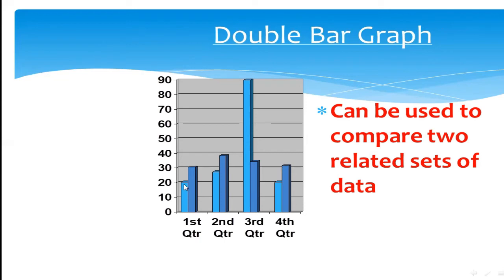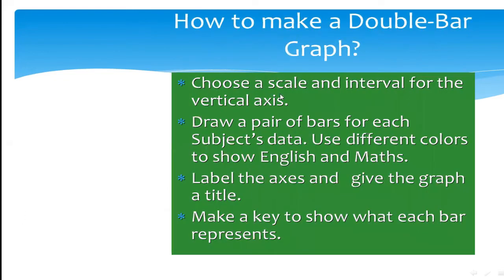For example, if I compare subjects: in the first quarter, 20 students liked Math but 30 students liked English. To make a double bar graph, the first step is to choose a scale and interval for the vertical y-axis. The second step is to draw a bar for each subject or category — whether subject, gender, or whatever the question gives. The third step is to label the x-axis and y-axis with a title.